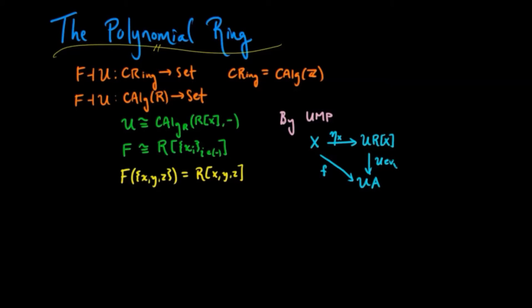there is a unique R-algebra morphism, known as evaluation, which takes a polynomial with coefficients in the ring R to the element in A, which is the sum of those coefficients acting on the elements in A given by the morphism from X to UA.